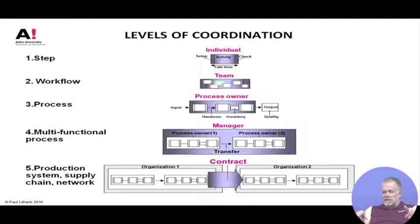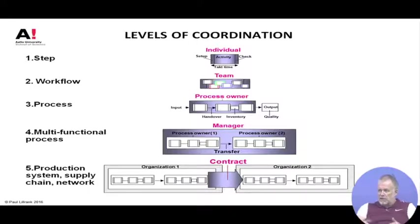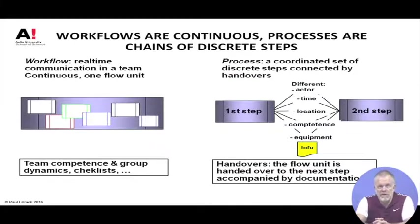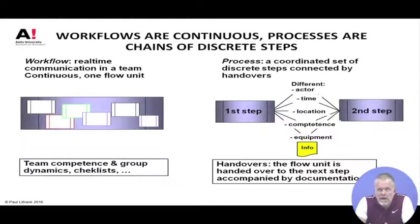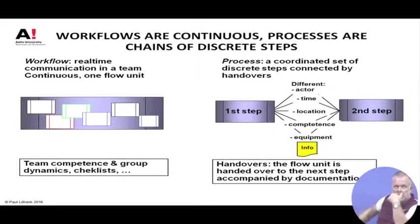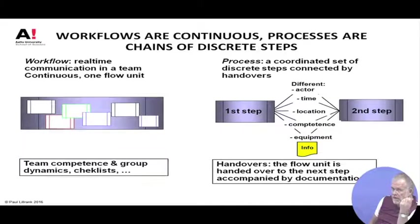A process is different from a workflow because it's discontinued and there is a gap between steps — something changes and you move on. The workflow is based on an uninterrupted accumulation of value; communication is real-time. In a process the thing is split up: between the first and second step something changes — you may have different persons continuing the work, a shift change, a lunch break, a change of location such as moving a patient to a different ward.